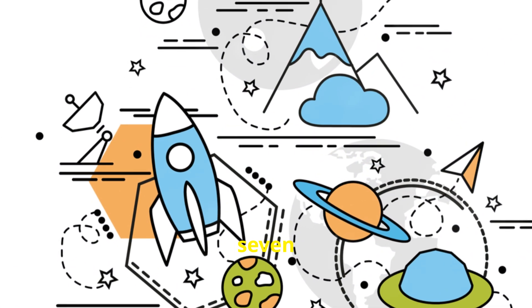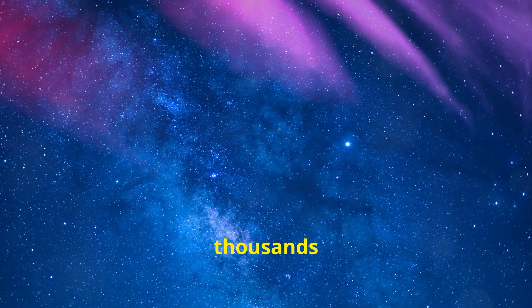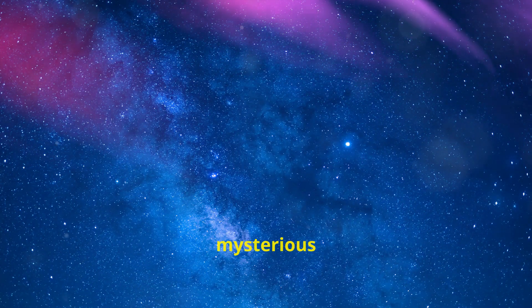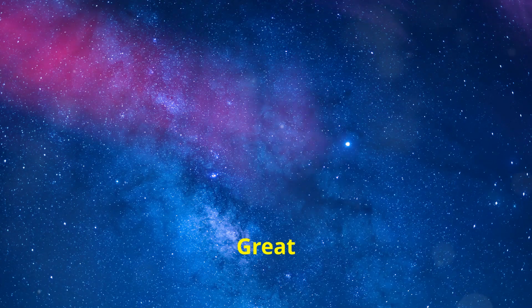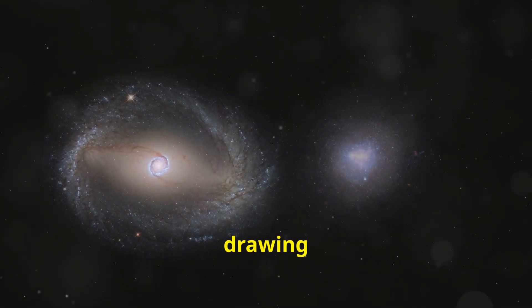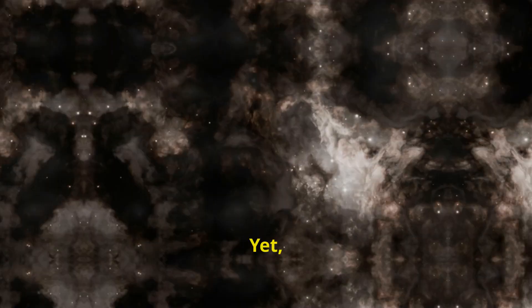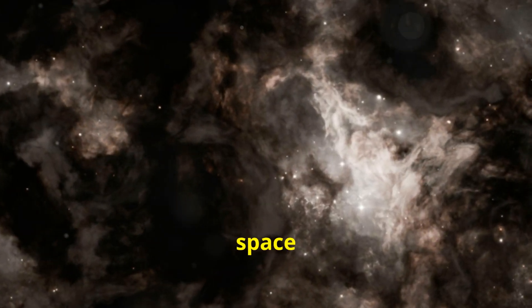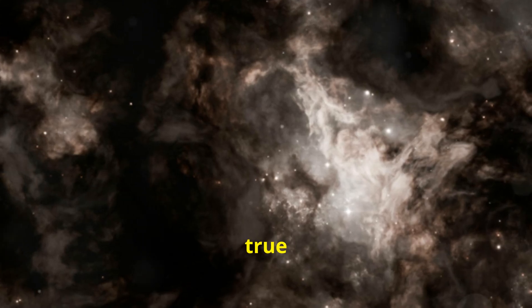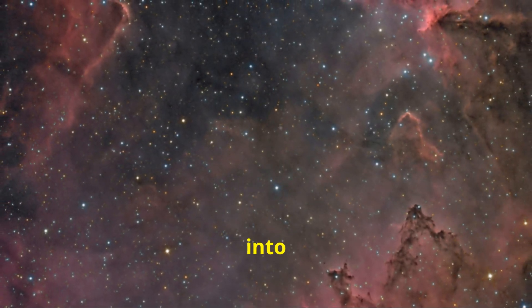Number 7, the great attractor. Our galaxy, along with hundreds of thousands of others, is being pulled towards a mysterious region of space known as the great attractor. This gravitational anomaly is so powerful that it's drawing entire galaxies towards it at millions of miles per hour. Yet hidden behind dense regions of space dust and stars, its true nature remains an enigma. A dark, unseen force pulling us into the unknown.